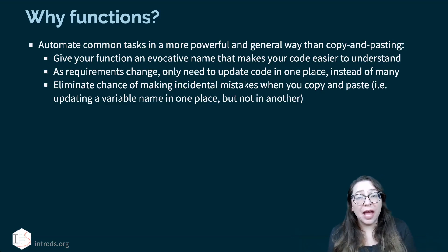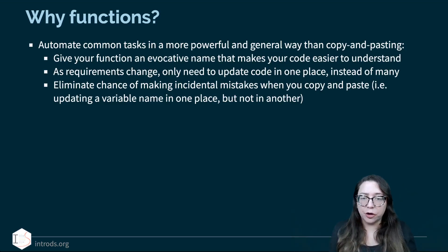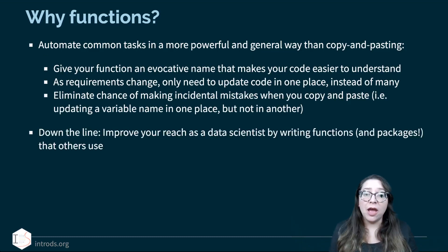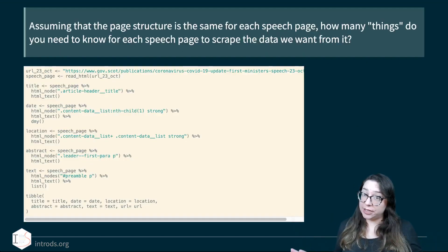So why might we want to write a function? They allow us to automate common tasks in a more powerful and general way than copying and pasting. You get to give your function an evocative name that makes your code easier to understand. As requirements change you only need to update code in one place instead of in many places and you eliminate the chance of making incidental mistakes when you copy and paste. For example it's very common if you're copying and pasting code to update a variable name in one place and forget to do so in another and then your code fails. And down the line though you can improve your reach as a data scientist by writing functions and packages which are basically a collection of functions that others use.